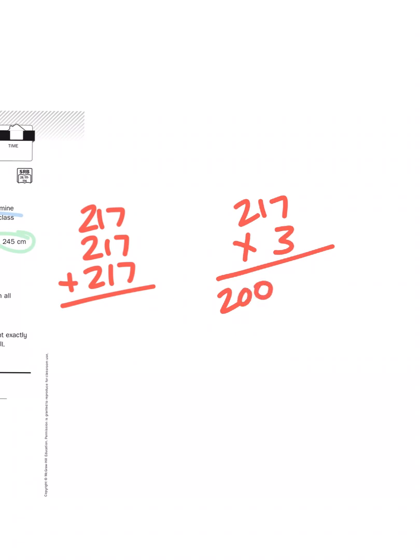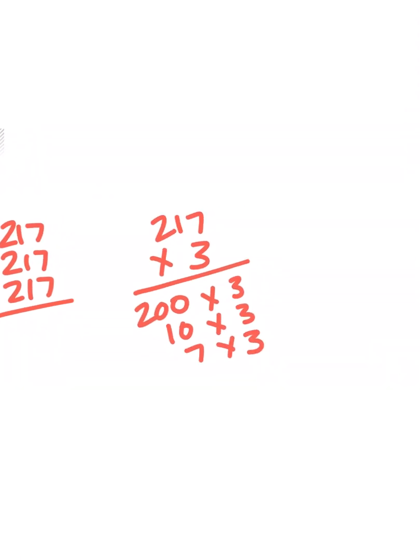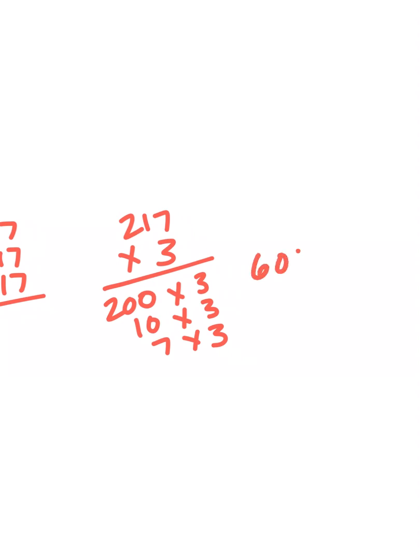I'm going to use partial products to help me solve this problem. I'm going to multiply each part by 3: 200 by 3, 10 times 3, 7 by 3. And as you can see, I get a total, when I add my partial products together, of 651 centimeters.